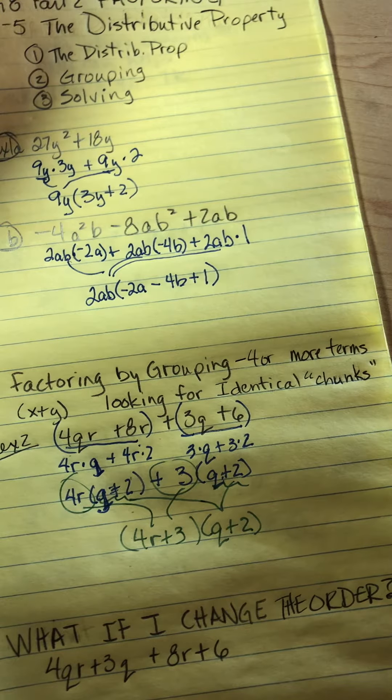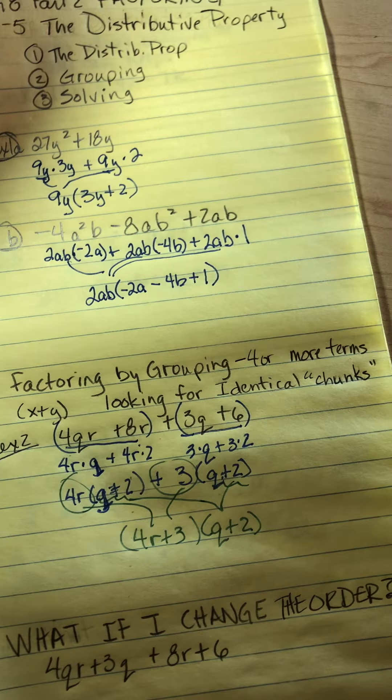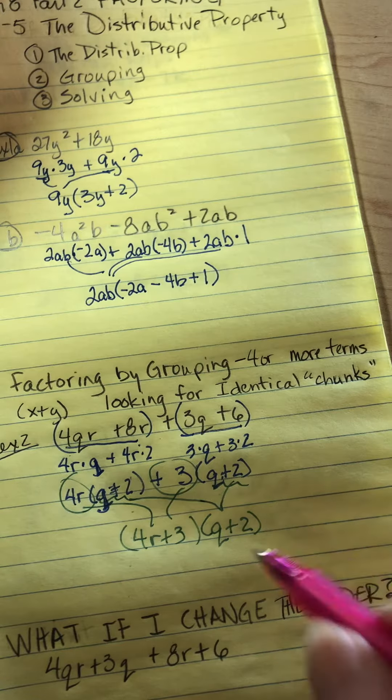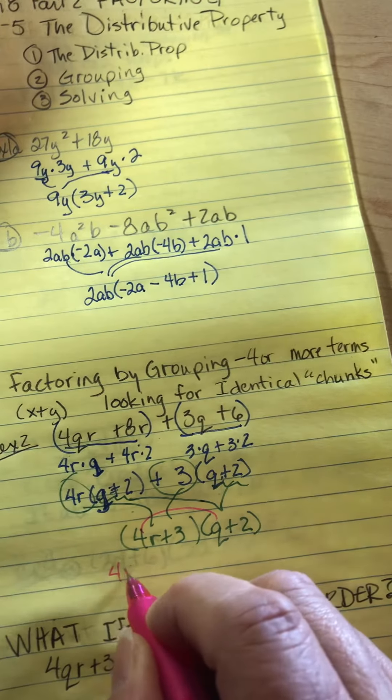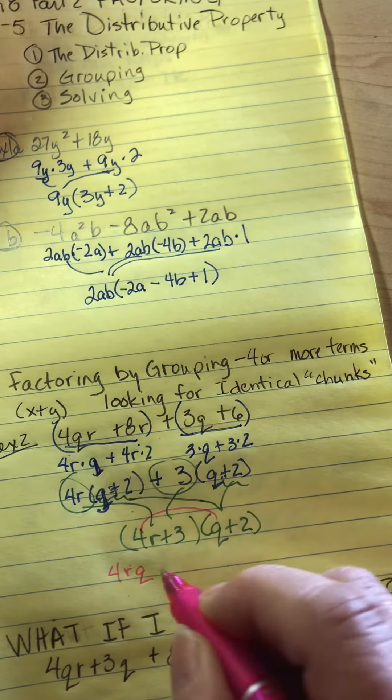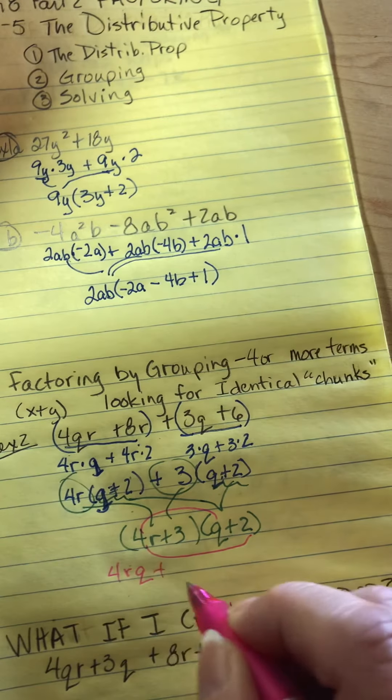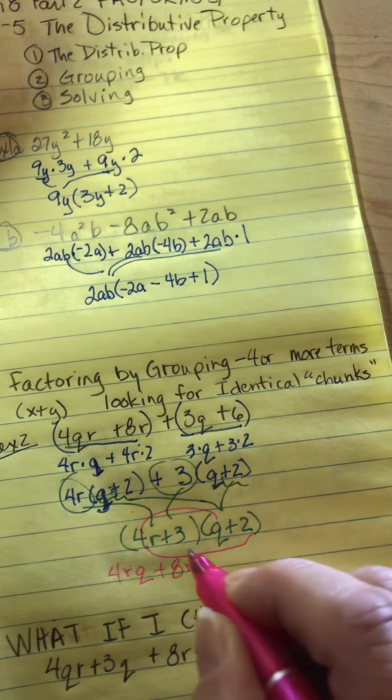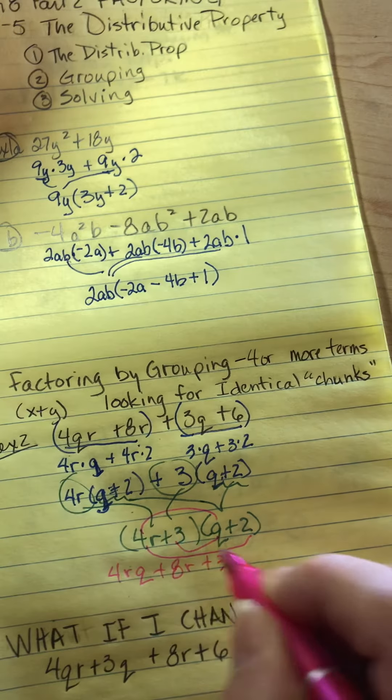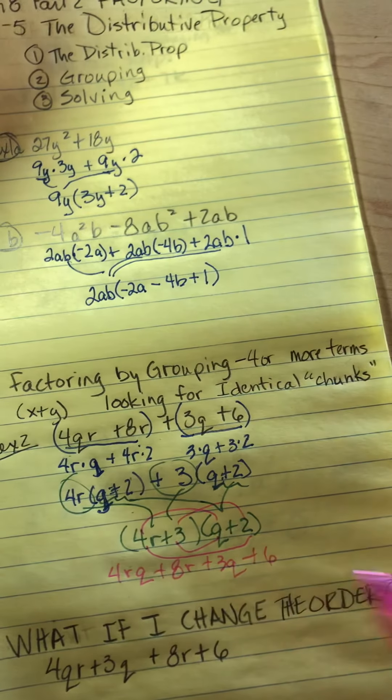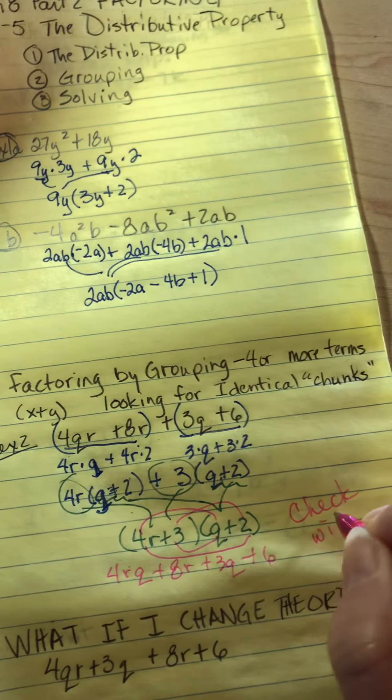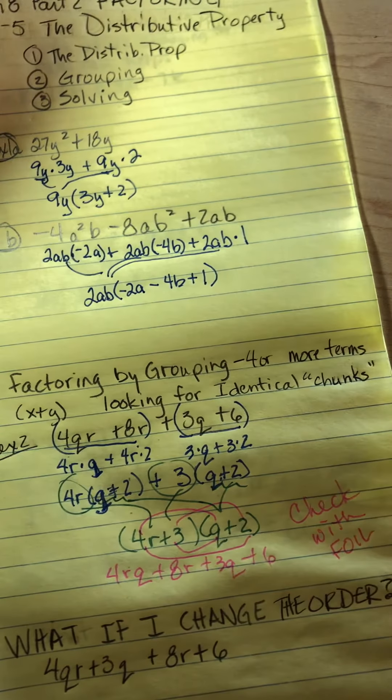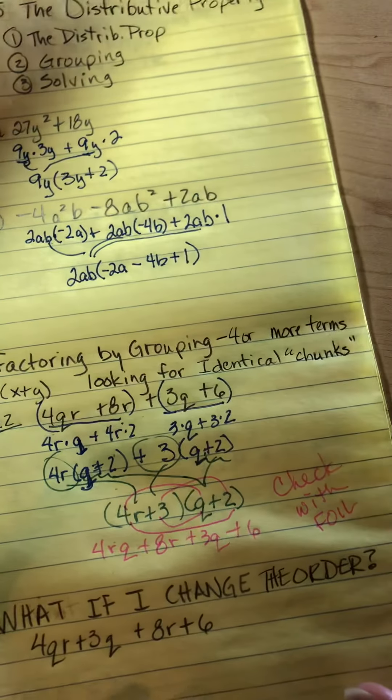Now it is completely factored. Could I check it? Absolutely. That's a nice thing. I can just multiply this back. Look what I get: 4RQ plus 8R plus 3Q plus 6. So I can check with FOIL. That's another way that you can know that you did it right.